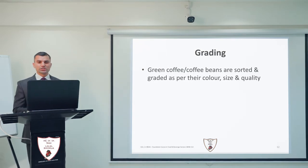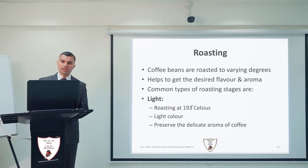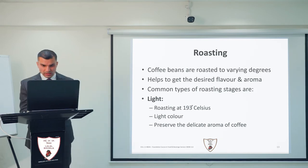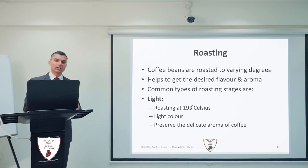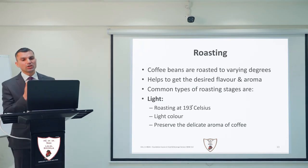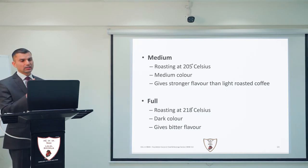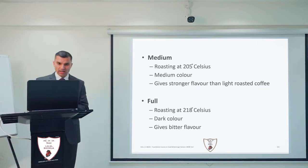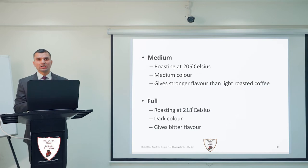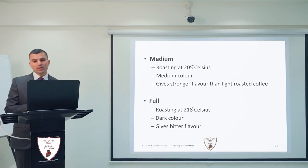The next step in coffee manufacturing is grading, where we sort and grade the coffee beans as per their color, size, and quality. Next is roasting, in which coffee beans are roasted to various degrees to get the desired flavor and aroma. There are different stages of roasting: light roasting at 193°C gives a light color and preserves delicate aroma; medium roasting at 205°C gives a brownish color and a stronger flavor; and full roasting at 218°C gives dark-colored beans with a bitter flavor.